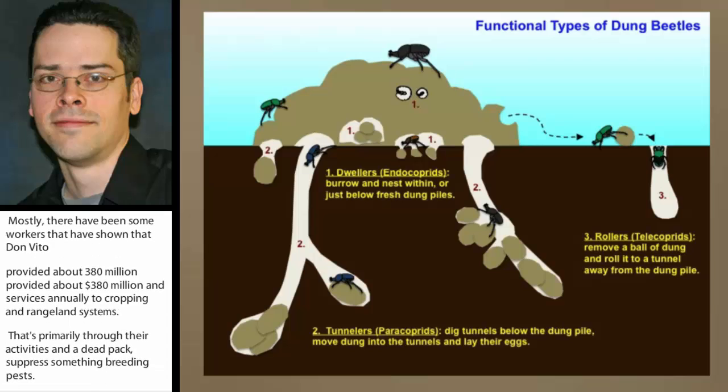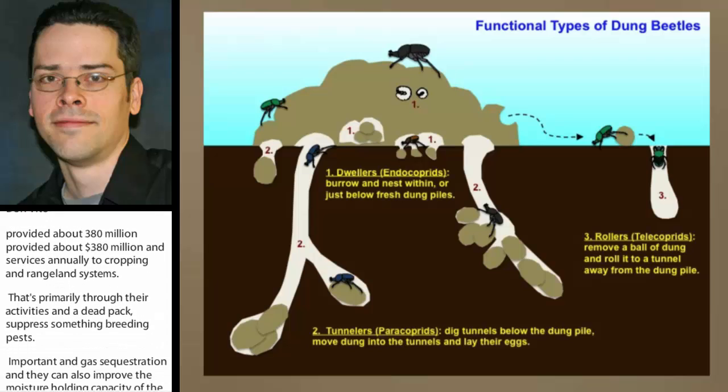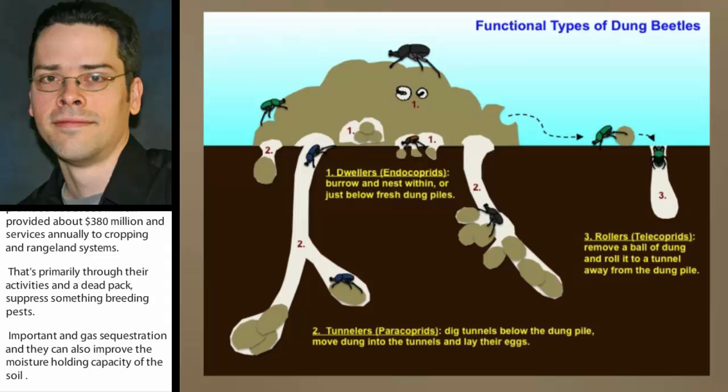Manure is a very ephemeral resource — it doesn't last very long. As a result, this group of insects has diversified greatly to make best use of this short-term resource.